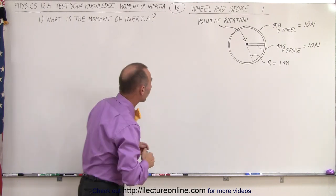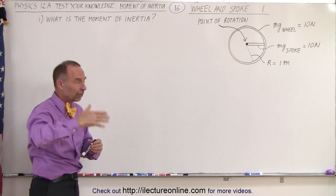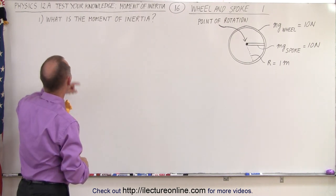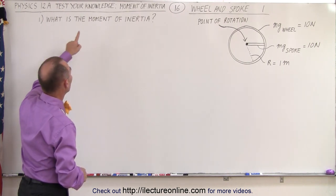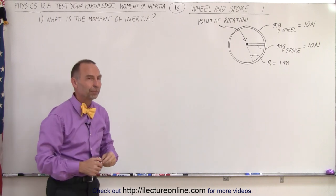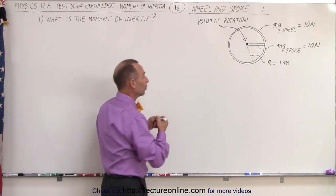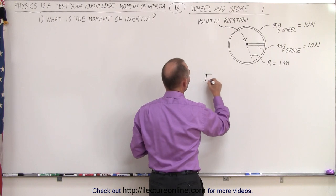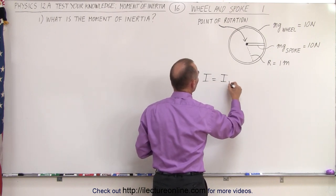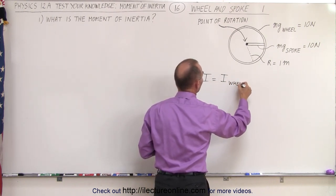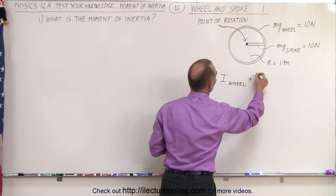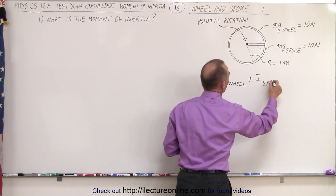The first thing we're going to do of several things, but that's going to come in subsequent videos. Here we're going to first calculate the moment of inertia of that particular object. So the moment of inertia is going to be equal to the moment of inertia of the wheel plus the moment of inertia of the spoke.